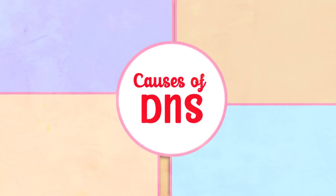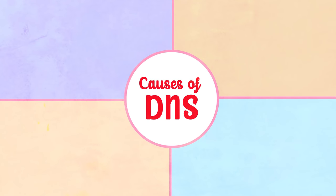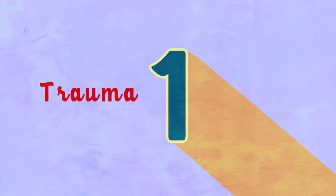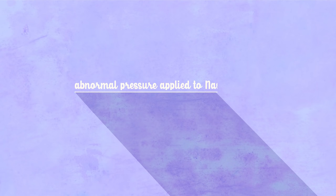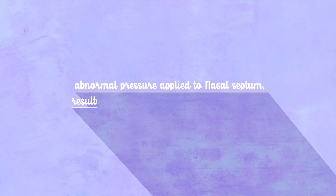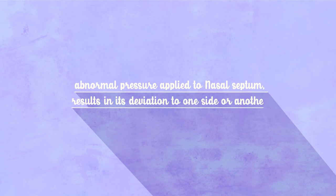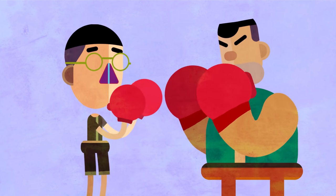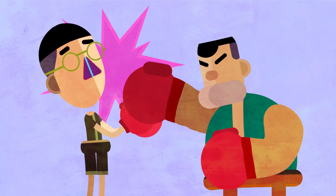Causes of DNS: there are four important causes. Number one is trauma. Any abnormal pressure applied to the nasal septum results in its deviation to one side or another — for example, being hit by a boxer on the nose.